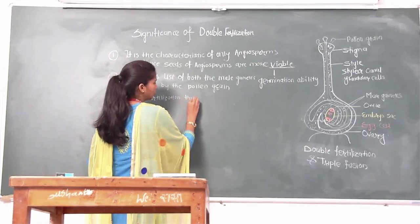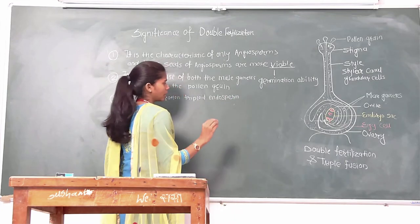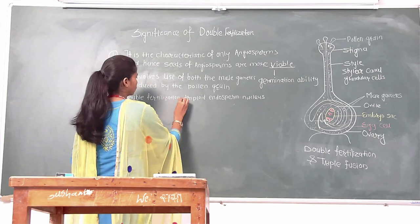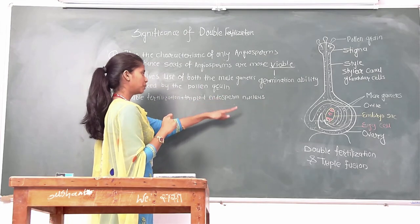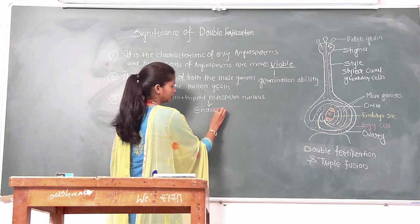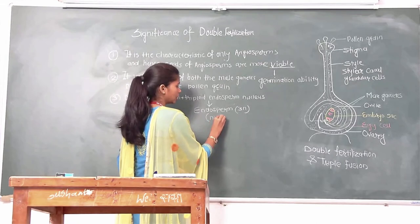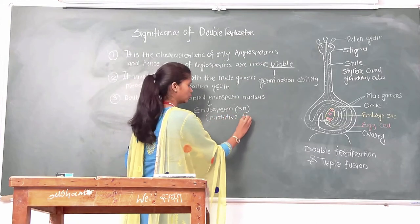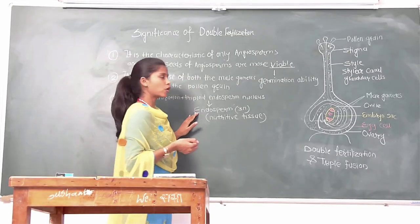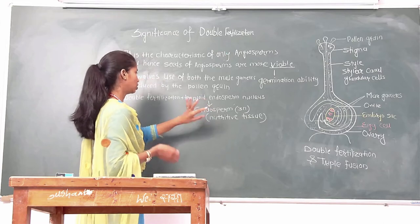The third significance is that double fertilization produces a triploid endosperm. We have seen that double fertilization is also known as triple fusion. This triple fusion produces triploid endosperm. This endosperm is triploid in nature and acts as a nutritive tissue which provides nutrition to the developing embryo.